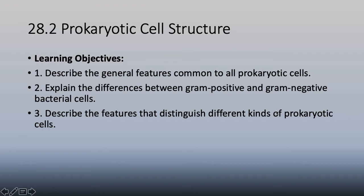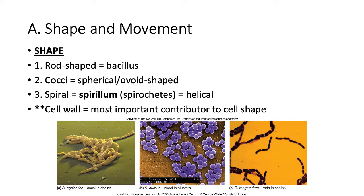Moving on to section two: prokaryotic cell structure. The three main shapes of bacteria are: rod-shaped, using the scientific term bacillus; spherical or ovoid-shaped, called cocci; and spiral-shaped, which may use the term spirillum or spirochete - basically helical.